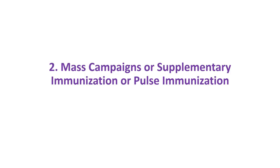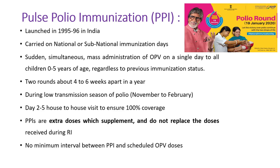The second strategy for polio eradication is mass campaigns or supplementary immunization, synonymous with pulse polio immunization (PPI). The nationwide pulse polio immunization campaign was launched for the first time in India in 1995–96. PPI is carried out on NIDs (National Immunization Days) or SNIDs (Sub-National Immunization Days). On NIDs, PPI is given to all eligible children of a country, while on SNIDs it is given in states where the risk of transmission is very high.